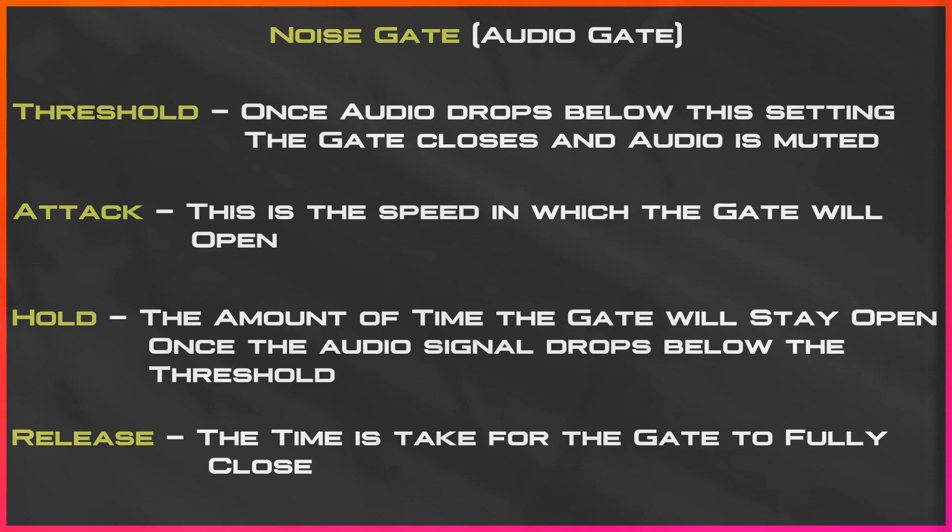The attack time is the speed at which the gate will open. Once that audio signal hits the threshold, it will set the speed at which the gate opens. The hold time is the amount of time the gate will stay open once the audio signal drops below the threshold. The release time is the amount of time it takes for the gate to be fully closed. You can imagine an actual gate closing — imagine audio traveling through a gate, and the amount of time it takes for that gate to fully close is what we're setting with the release time. Same with the attack time: imagine the amount of time it takes for a gate to open to allow the full audio to come through.